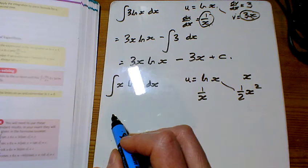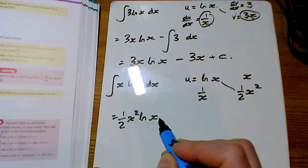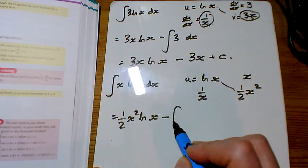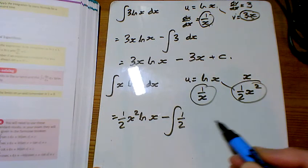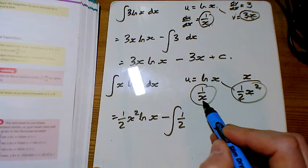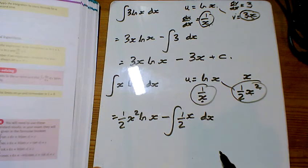So, the integral becomes 1 half x squared ln x minus the integral of these two things times together, which is 1 half x squared divided by that x, just leaves us with one of those x's there, dx.